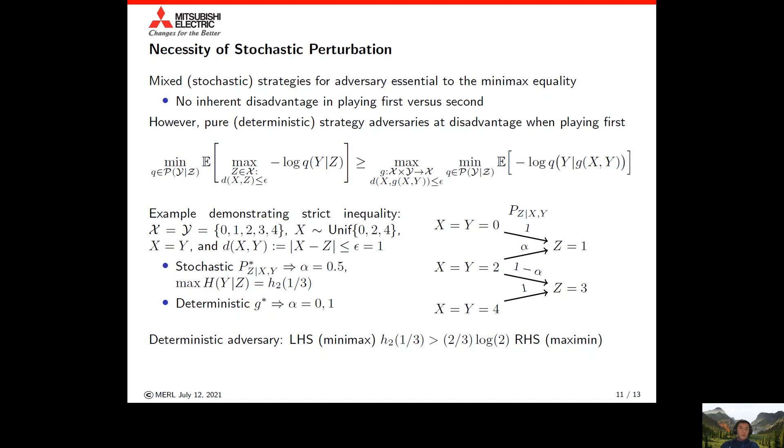On the other hand, if you're restricted to a deterministic adversary, the only thing you can do is set alpha equal to 0 or 1, since it has to be a deterministic mapping from X, Y to Z. In this case, the solution of the left-hand side minimax problem is equal to the binary entropy function of 1 over 3. However, on the right-hand side, because the adversary has to be picked first and the decision rule can be picked second with the inner minimization, the value of that game is only two-thirds times log of 2, which is less than the left-hand side solution.